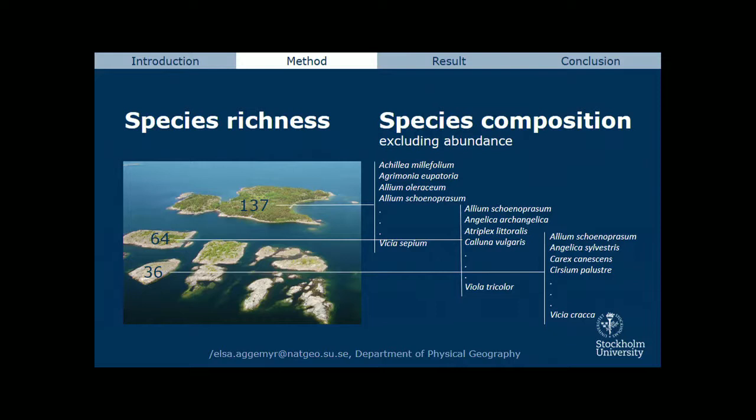I have the same dataset from the same islands and same inventory. On one hand, I use only the species number — species richness. On the other hand, I use the species identity, excluding abundance.